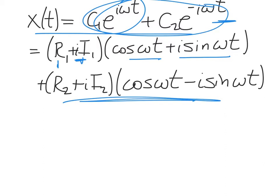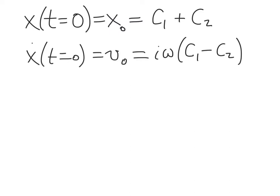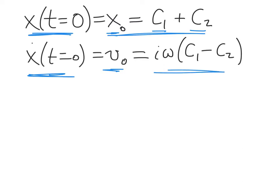Now let's express c1 and c2 in terms of the initial velocity and displacement. We imagine our oscillator at time t=0 has some initial displacement x₀. If we plug in t=0 to the expression for x(t), we find that x₀ equals c1 plus c2—one equation for two variables. If the initial velocity is v₀, we take the time derivative of that equation and plug in t=0, getting an expression for v₀. Now we have two equations and two unknowns.